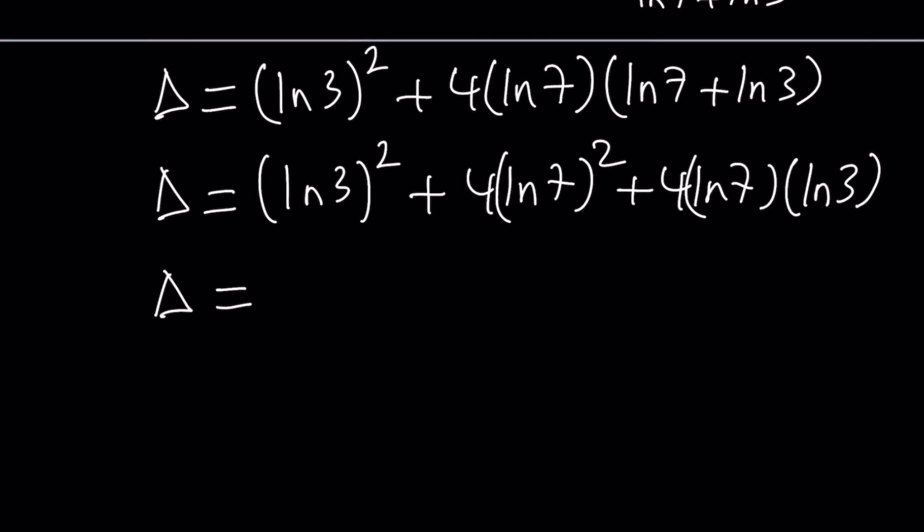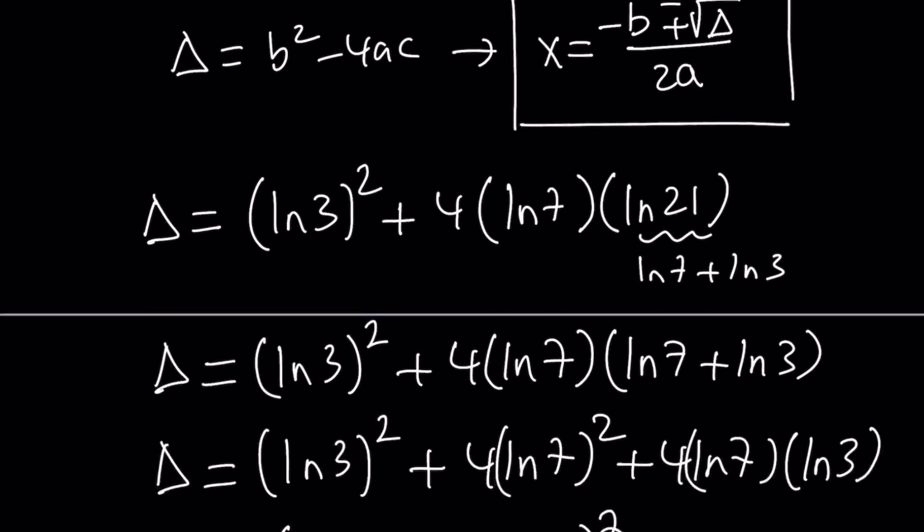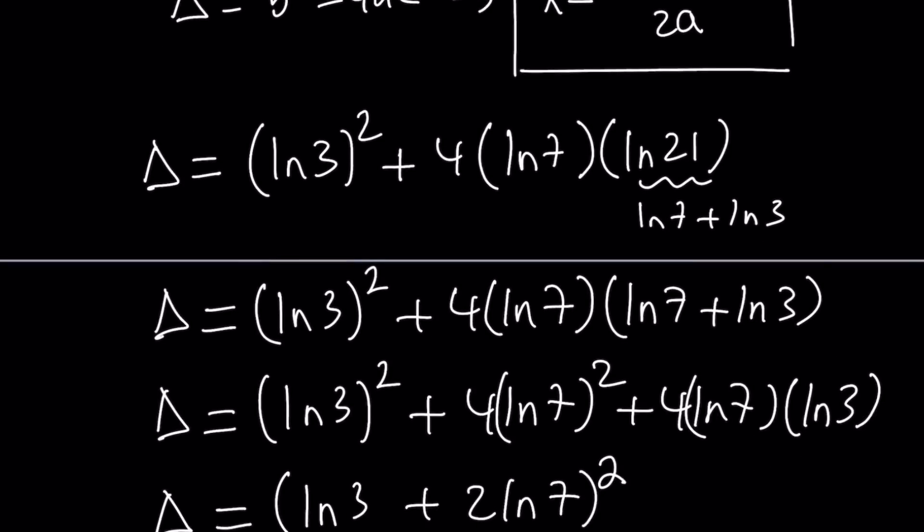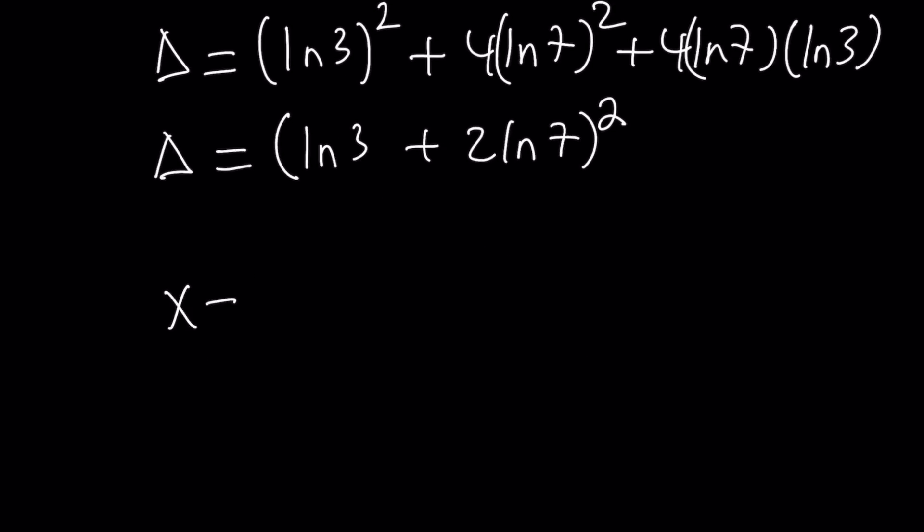Now why is this awesome? Because this is a perfect square. And when you get a perfect square discriminant, it's actually really awesome. So what is this? It is ln 3 plus 2 ln 7 quantity squared. And when you square root the discriminant, you're just going to get the expression without the square.